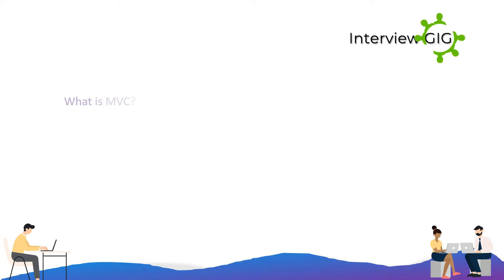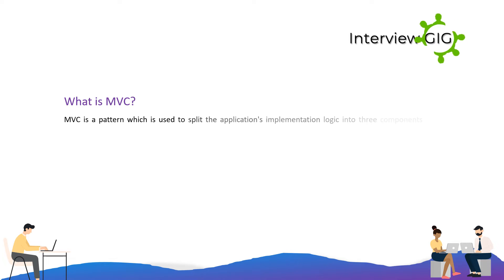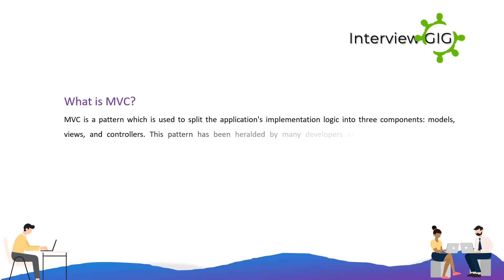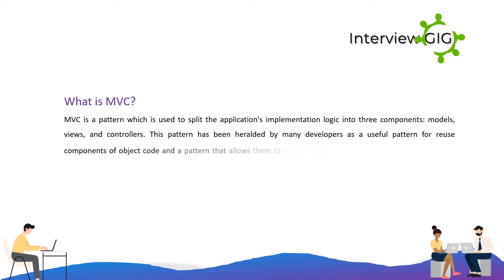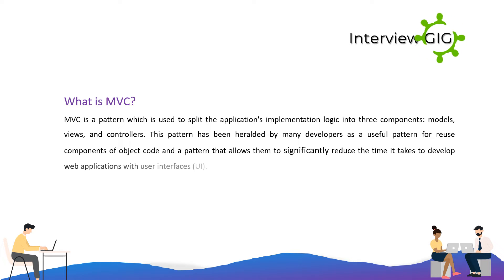What is MVC? MVC is a pattern which is used to split the application's implementation logic into three components: models, views, and controllers. This pattern has been heralded by many developers as a useful pattern for reuse of object code components, and a pattern that allows them to significantly reduce the time it takes to develop web applications with user interfaces.